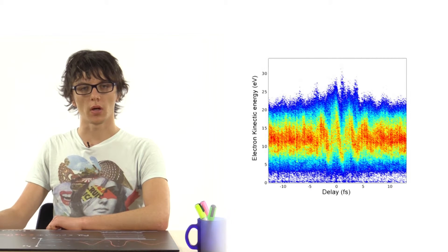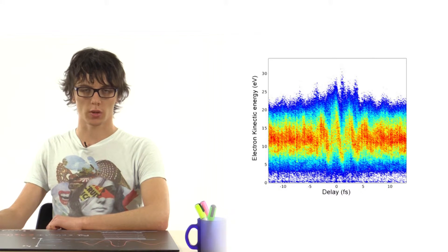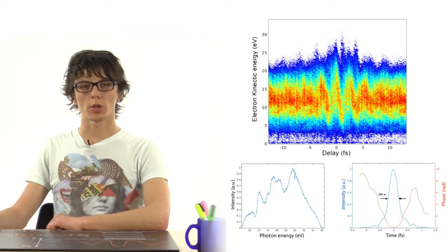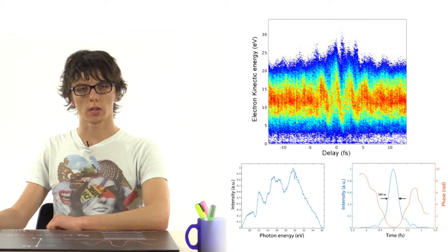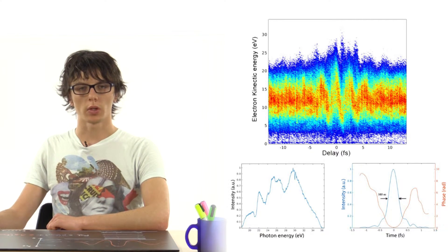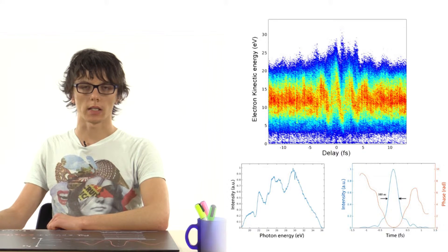The measurement can be performed with a reaction microscope, and it allows for the retrieval of both the XUV and the streaking field. Here, for instance, we demonstrate the generation of isolated attosecond pulses at 20 electron volt photon energy, with a time duration down to 380 attoseconds.